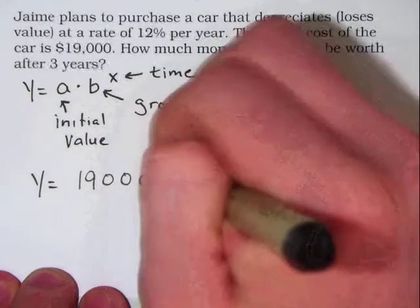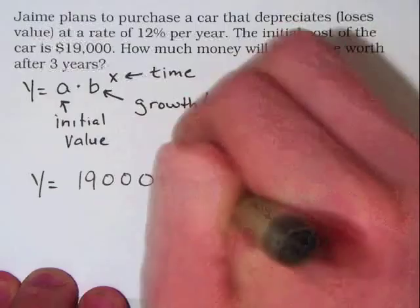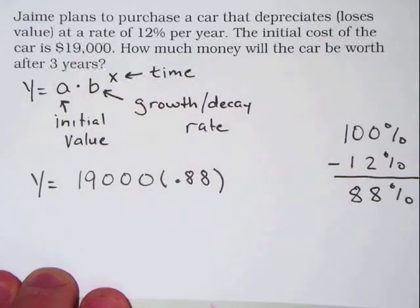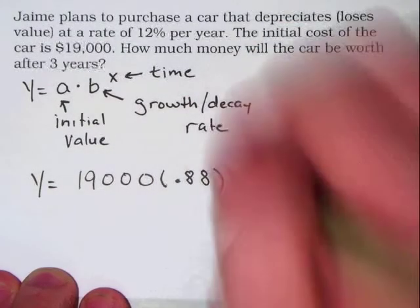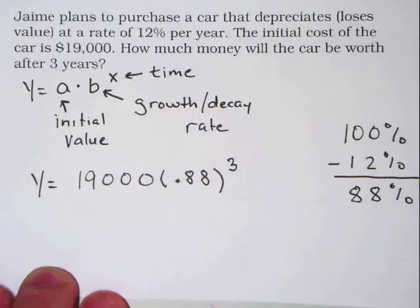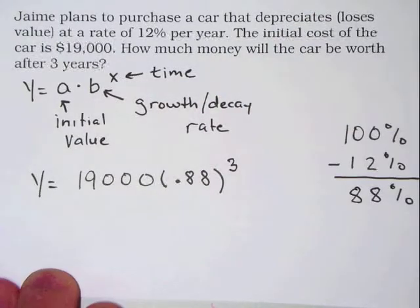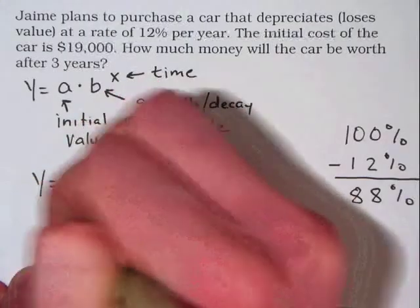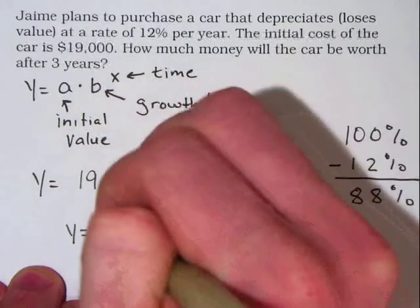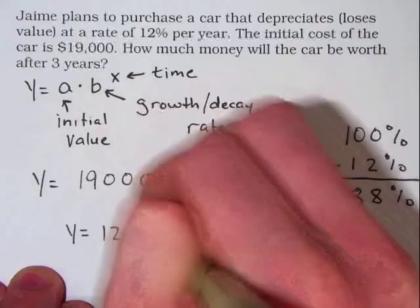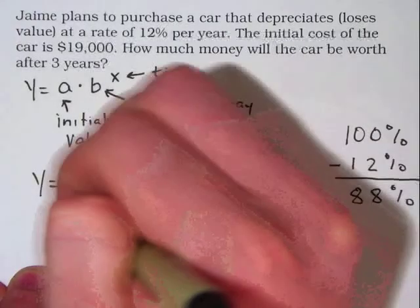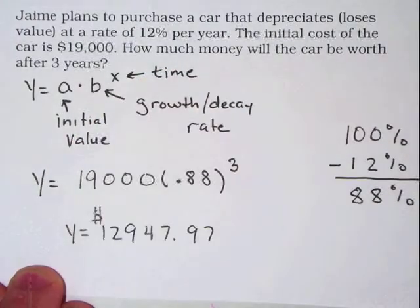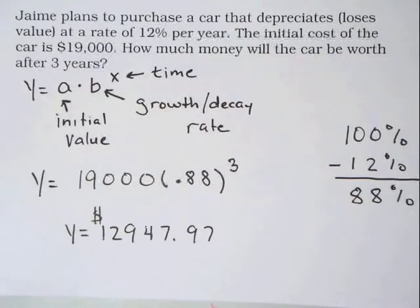Our decay rate as a decimal is 0.88. X represents our time, and the question asks us to calculate the value of the car in three years. When we plug all this into the calculator, we estimate that our $19,000 car will only be worth approximately $12,947.97 after three years.